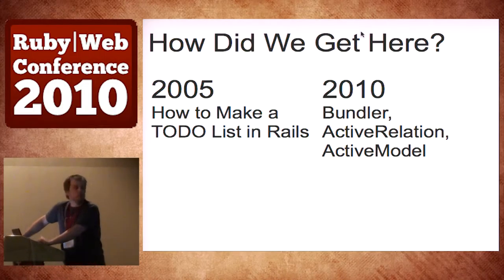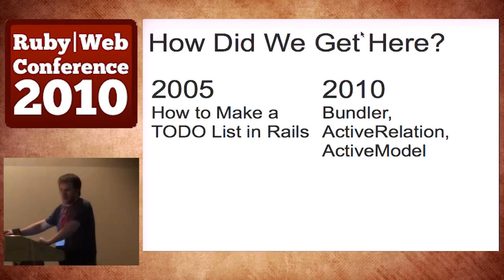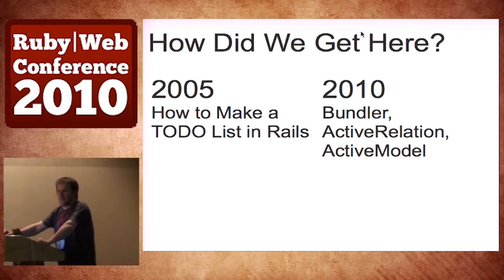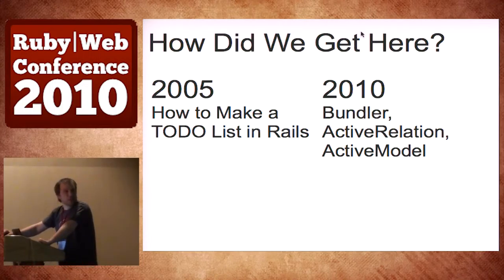For me, Ruby in 2005 was Rails. And Rails in 2005 was how to write a blog in 10 minutes, how to build another to-do app. A lot of just simple models. We were kind of celebrating the ORM and building web apps that had just a sprinkle of Ajax in them. They were pretty simple back then, at least for me.